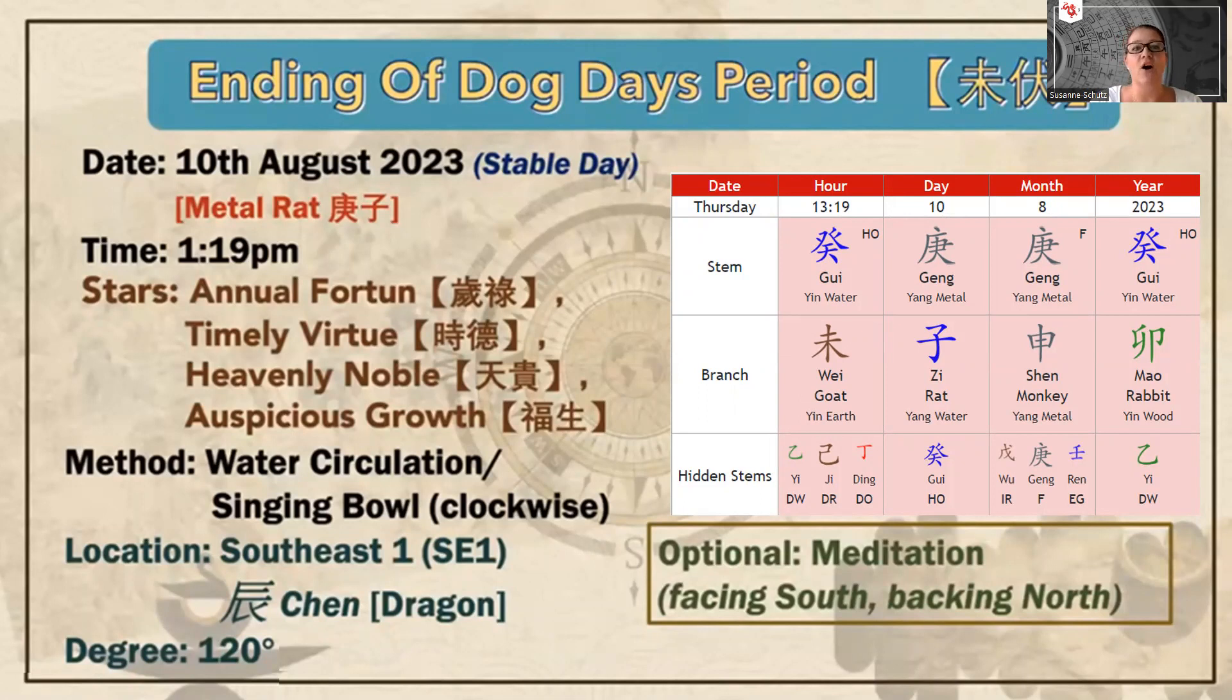Today I'm going to tell you about the end of the Dog Days period. For those who have been following me, you know that we are going through the Dog Day period in Chinese Metaphysics. That is a time of healing, working on your physical, mental and emotional well-being. There are three stages: the beginning, the mid part, and now we have an activation for the ending of the Dog Days period.